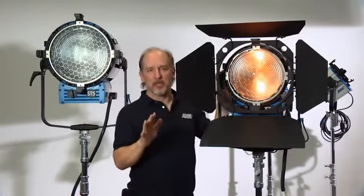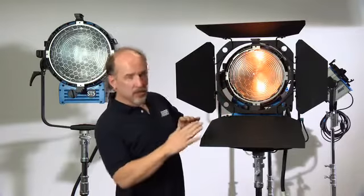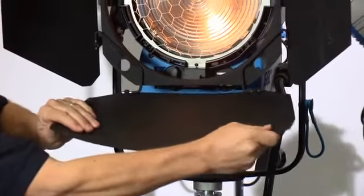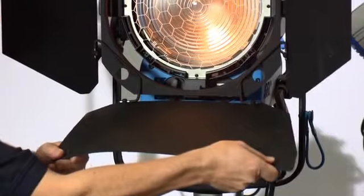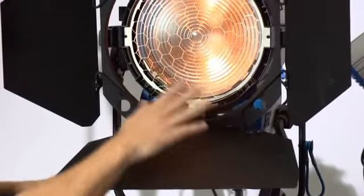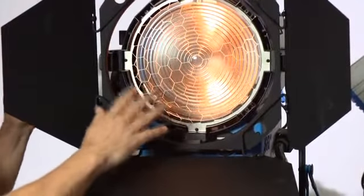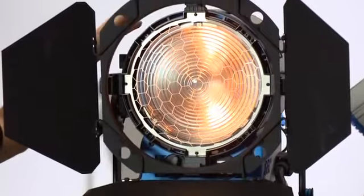There are so many improvements in these new Fresnel lens lights and it starts with the barn doors. This is a new aluminum alloy that resists crimping and bending. And of course, we've got this light dimmed way down for the demo because the 5000 watt Fresnel is incredibly bright.